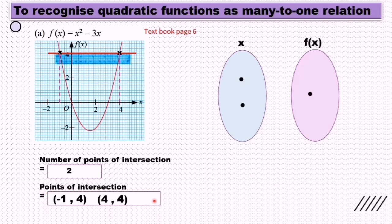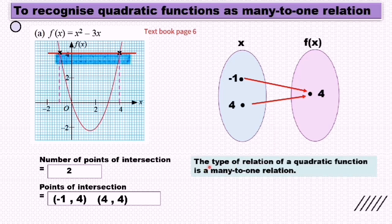If we draw these two points into the function diagram, we have f(-1) = 4 and f(4) = 4. The same number, we write one time only. We draw the arrow. The type of relation of a quadratic function is a many-to-one relation. You see here we have two mapping to one, so many to one.